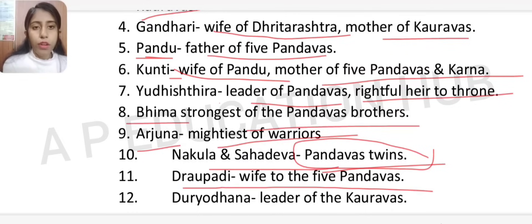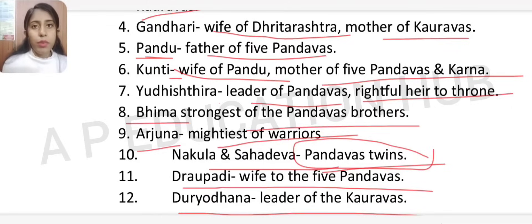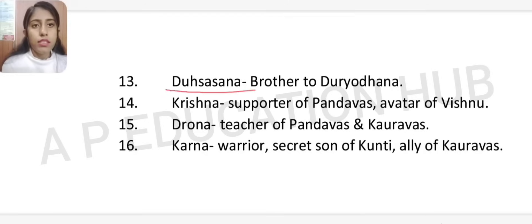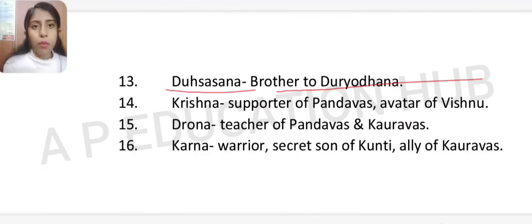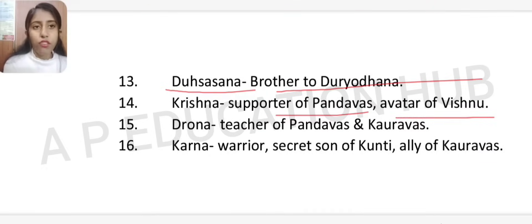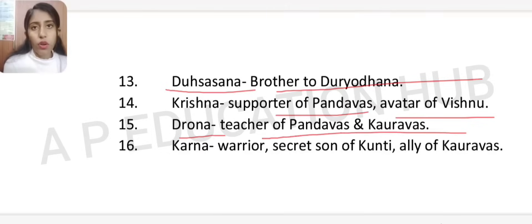Draupadi is the wife of all five Pandavas. Duryodhana is the leader of the Kauravas — a villainous character. Duhshasana is the brother of Duryodhana — both sons of Dhritarashtra and Gandhari. Krishna is the supporter of the Pandavas and an avatar of Lord Vishnu. Drona is the teacher of both the Pandavas and Kauravas, teaching them archery.